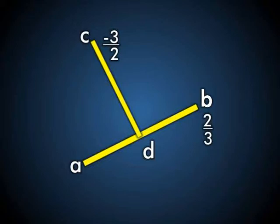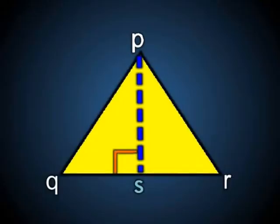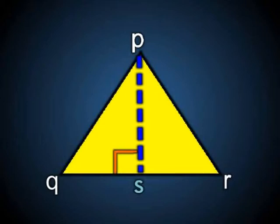Taking that definition and moving it into triangles, if any median happens to be the perpendicular bisector, it means that that line is the height of the triangle. For example, in triangle PQR, if I sketch a median PS and PS is at a 90 degree angle to QR — perpendicular to QR — and S is the midpoint of QR, that means that PS is the perpendicular height of the triangle.